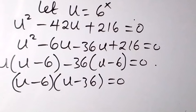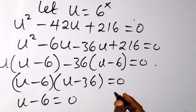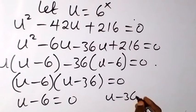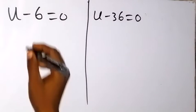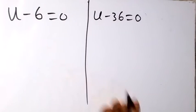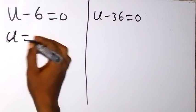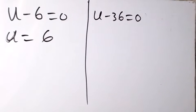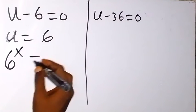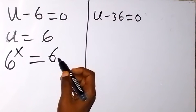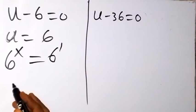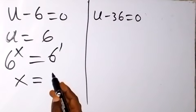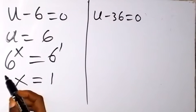We now have two solutions. Either u minus 6 equals 0, giving u equals 6, or u minus 36 equals 0. Since u equals 6 raised to the power x, from u equals 6 we get 6 raised to the power x equals 6, which is 6 raised to the power 1. Equating the powers, x equals 1.